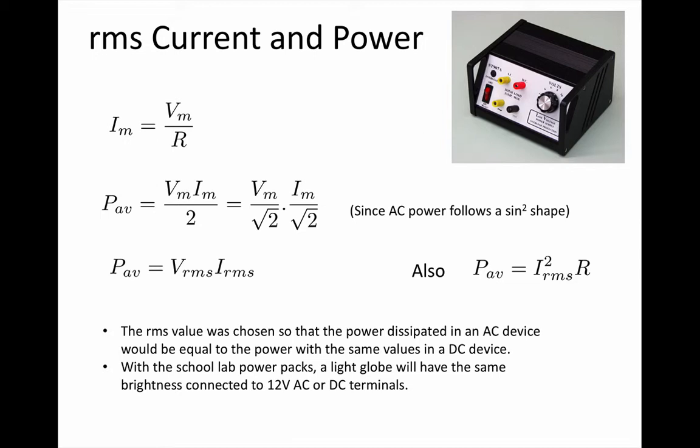Since it's a sine squared, that means that the average is half of the peak value. So average power will be maximum V times maximum I over 2, which equals Vm over root 2 times Im over root 2. So we end up with the average power equals the RMS voltage times the RMS current.